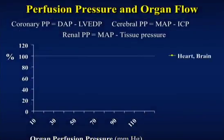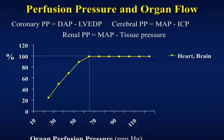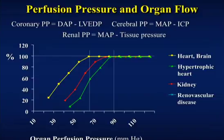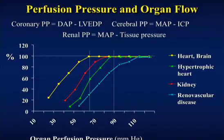Looking at heart, brain, and organ perfusion pressure together, we have an autoregulatory value of about 65 mmHg for mean arterial pressure. But if I have a hypertrophic heart, I'll need a higher pressure, and the kidney needs higher still. With renal vascular disease, the level is higher again. So there is no one magic mean arterial pressure that will ensure perfusion of all your organs.